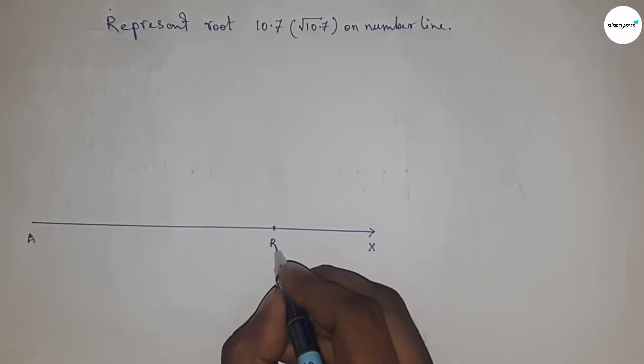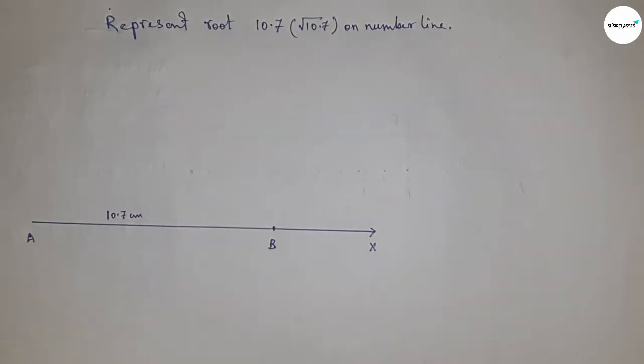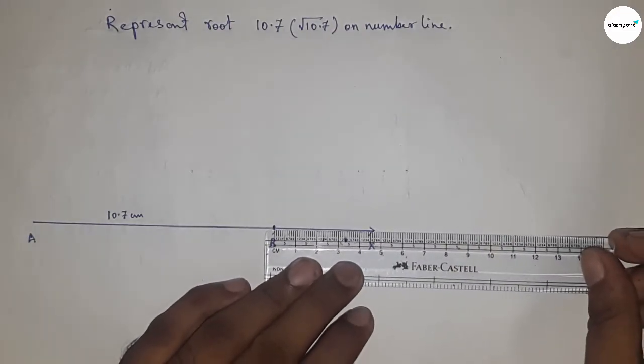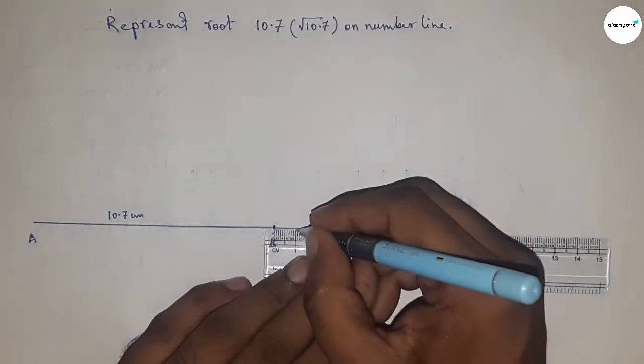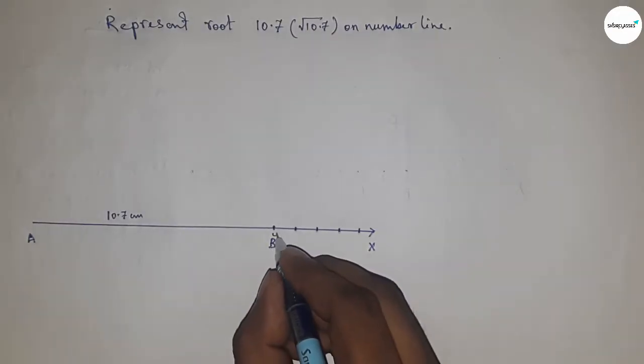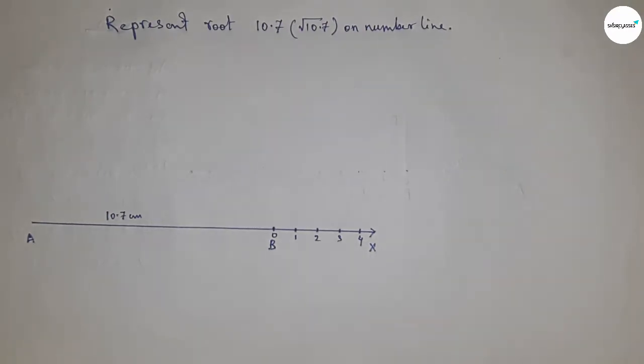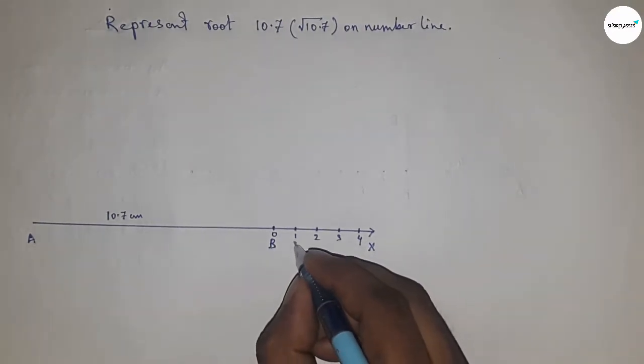Taking this is B point, so AB is 10.7 centimeter. Next, marking the numbers on the line from B to X by using scale. So this is 0, 1, 2, 3, 4 and so on. Next, taking this is C point.